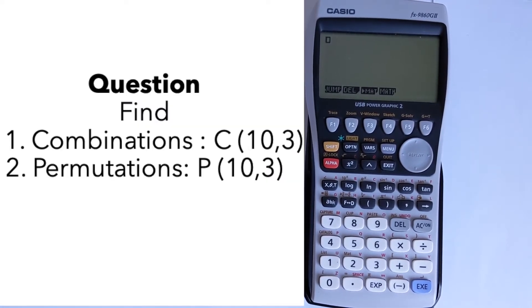We're going to first find a combination - the combination of 10 and 3 - and then we're going to do permutations of 10 and 3 again. In both cases we've got n equals 10 and r equals 3 to make things simple.